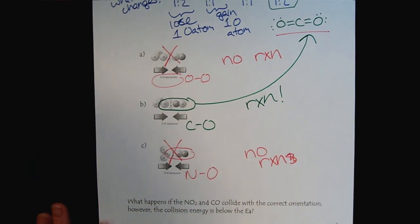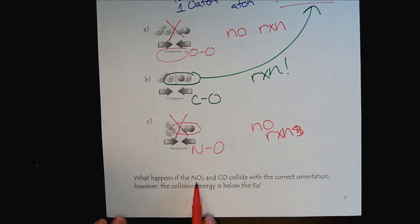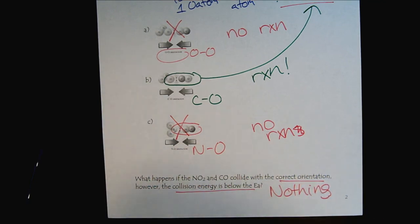And then to tie this all together, let's think about what happens if the nitrogen dioxide and the carbon monoxide collide with the correct orientation. However, the collision energy is below the activation energy. What happens? Nothing. For a chemical reaction to occur, we have to have all three events simultaneously. We have to have the collision with sufficient energy and the correct orientation.